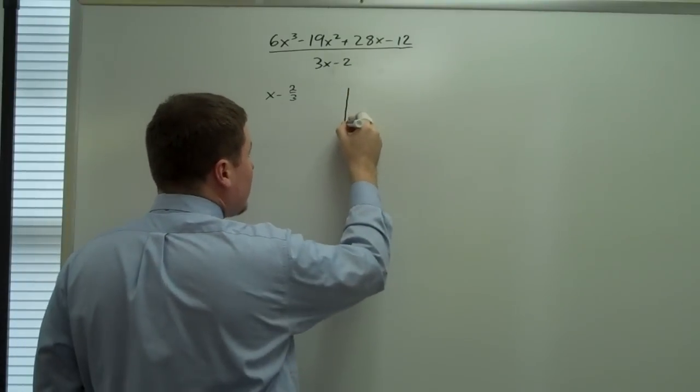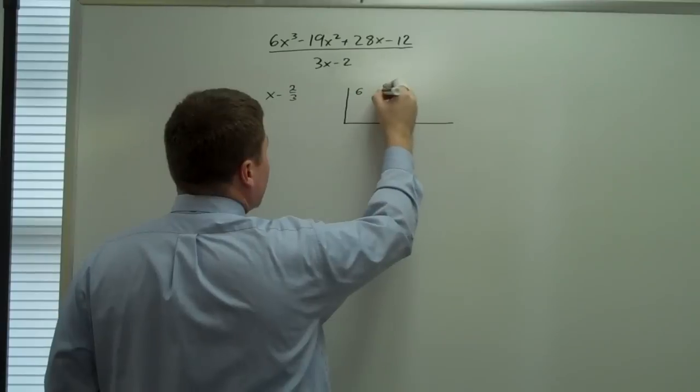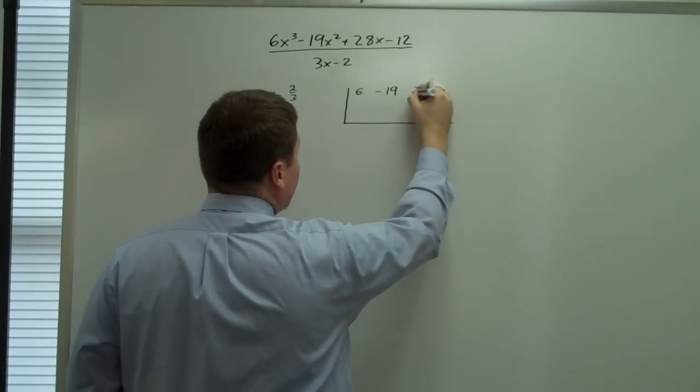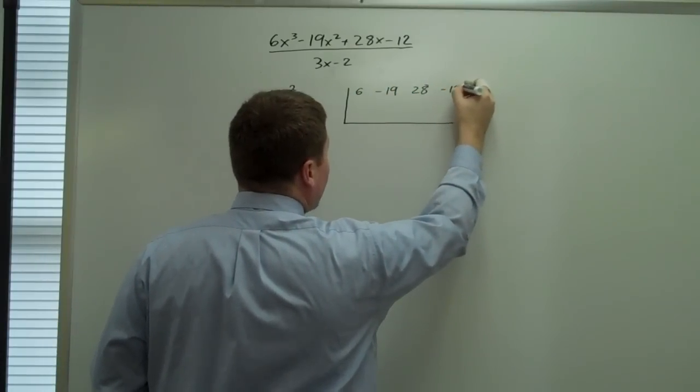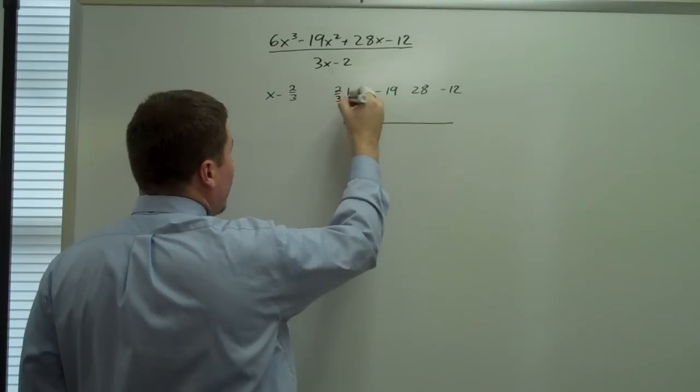So we're going to start out with our quotient bar. We're going to have 6, negative 19, 28, and negative 12. Then we're going to have 2 thirds out here.